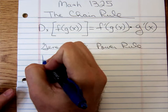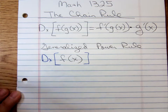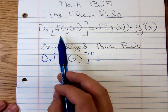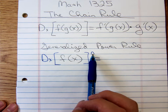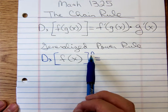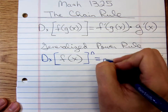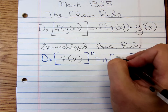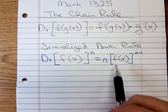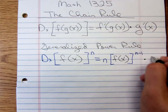Suppose we have a function of x raised to a power. Instead of just having a single letter to a power, suppose you have a quantity to a power. According to the chain rule, we have a composition: the power function composed with the inner function f of x. So to differentiate a quantity raised to a power, you differentiate the outer function leaving the inside function alone, subtract 1 to get the new exponent, then multiply by the derivative of the inside stuff — that's f prime of x.